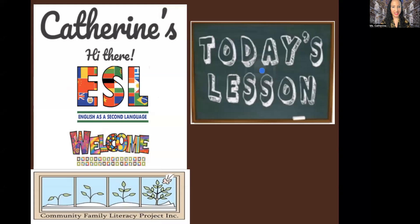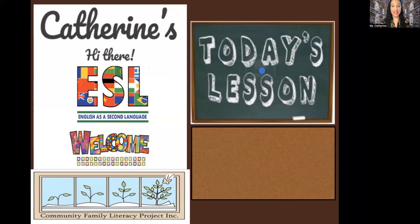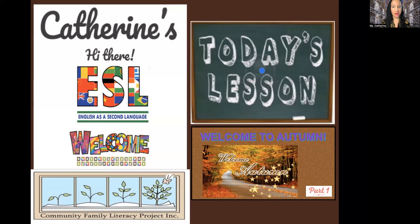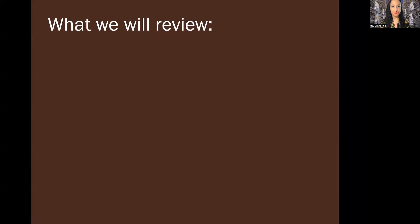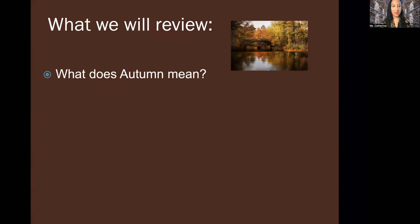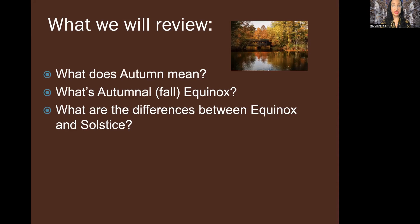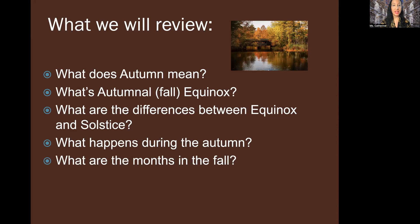So let's have some fun, everyone. How is everyone doing? I'm doing fantastic. Welcome to autumn, part one. This will be part one of two, so stay tuned for part two in another lesson. What will we review? What does autumn mean? What's the autumnal or fall equinox? What are the differences between equinox and solstice? What happens during the autumn? What are the months in the fall?